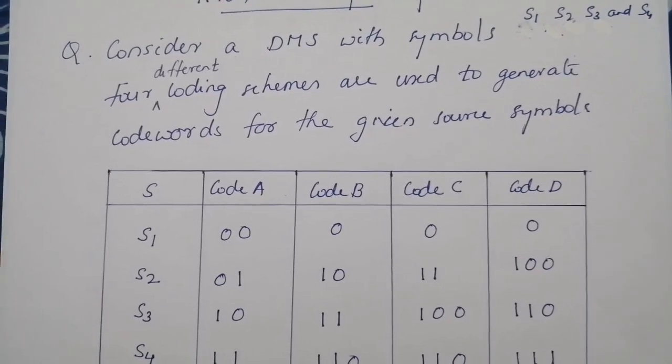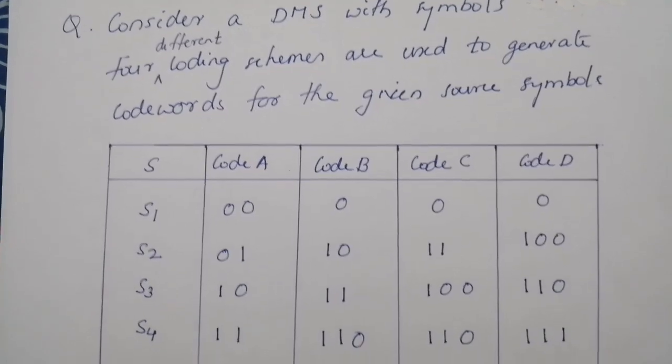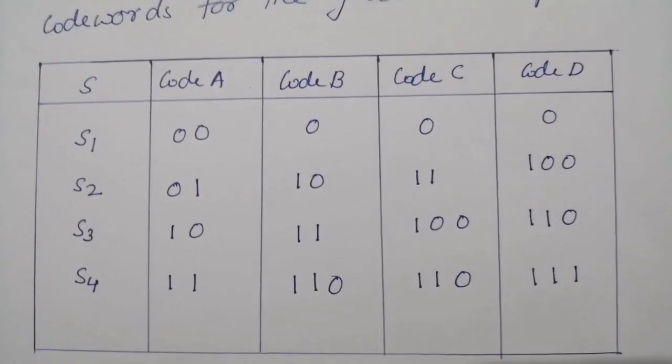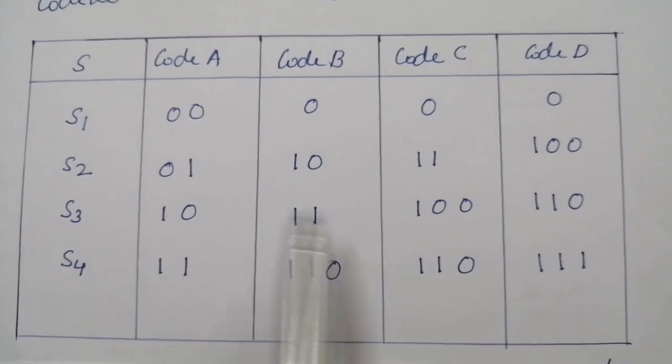Four different coding schemes are used to generate the codeword for the given source symbols. So these are the coding schemes. Now evaluate Kraft's inequality for the four coding schemes.